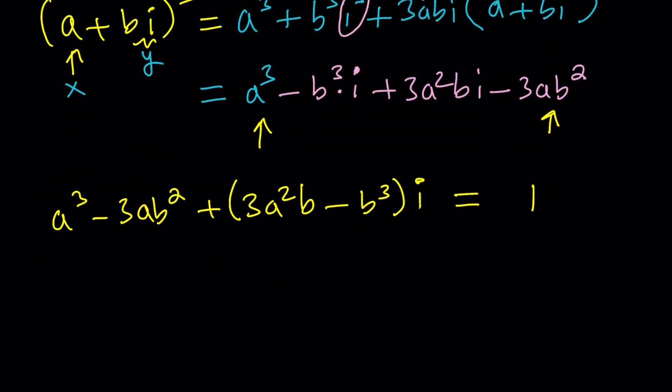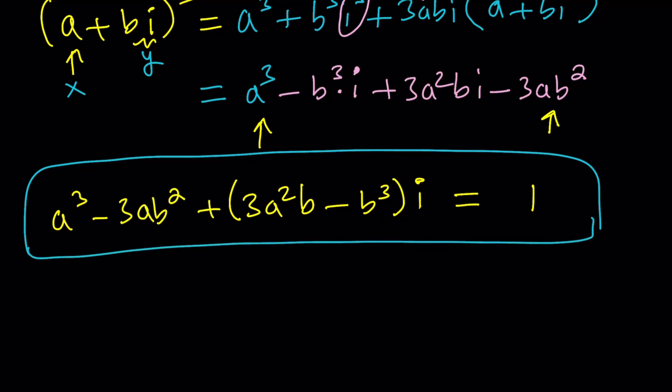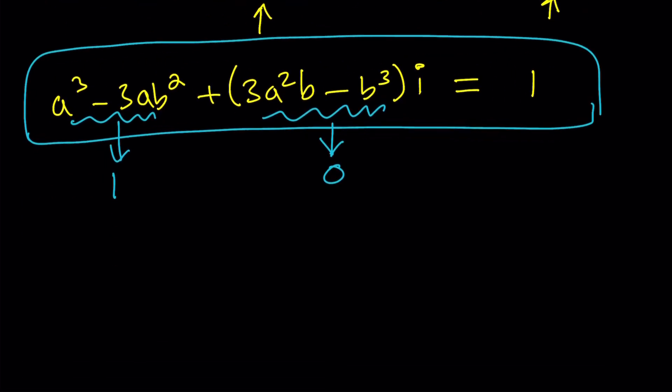This is a really nice equation because we have something quite complicated on the left-hand side, but something super simple on the right-hand side. So these are two complex numbers that are equal. The real part on the left-hand side is 1. And since there's no imaginary on the right, the imaginary part will be 0. So this gives us a nice system of equations.